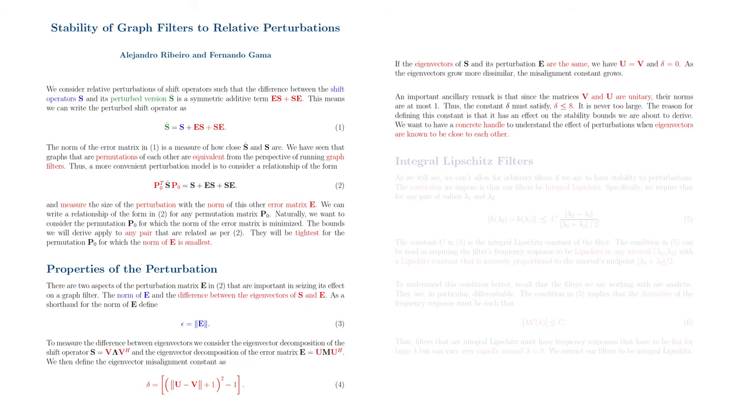An important ancillary remark is that since the matrices V and U are unitary, their norms are at most 1. Thus, the constant delta cannot exceed 8. It is never too large. The reason for defining this constant is that it has an effect on the stability bounds we are about to derive. We want to have a concrete handle to understand the effect of perturbations when eigenvectors are known to be close to each other.